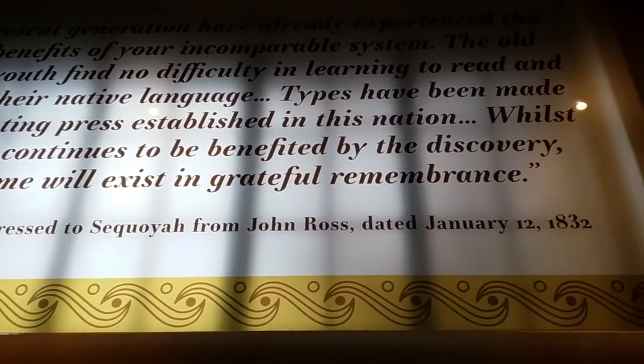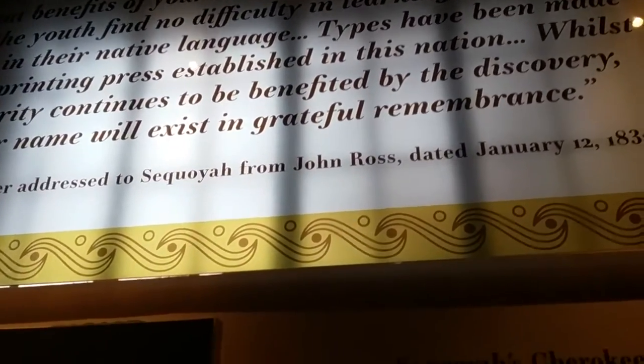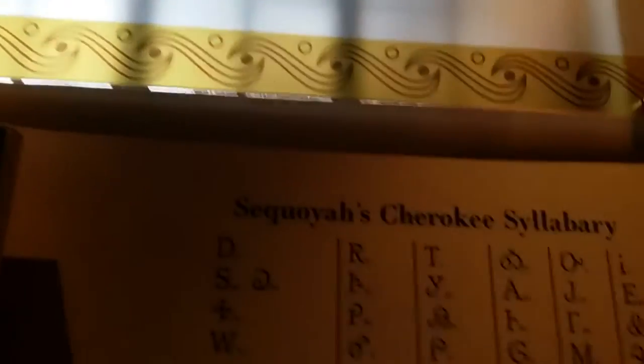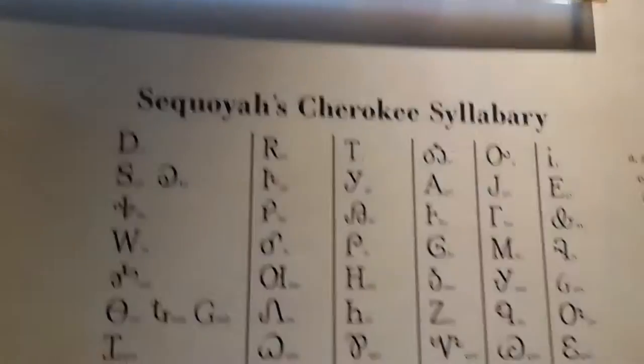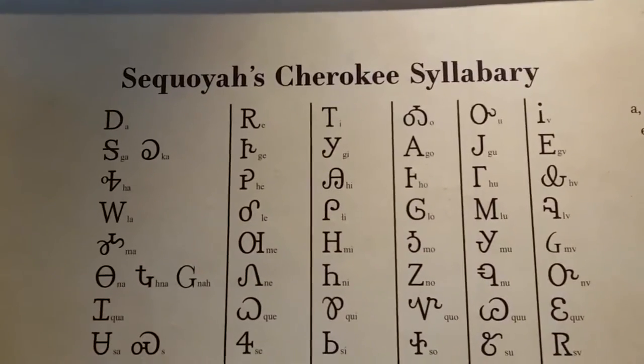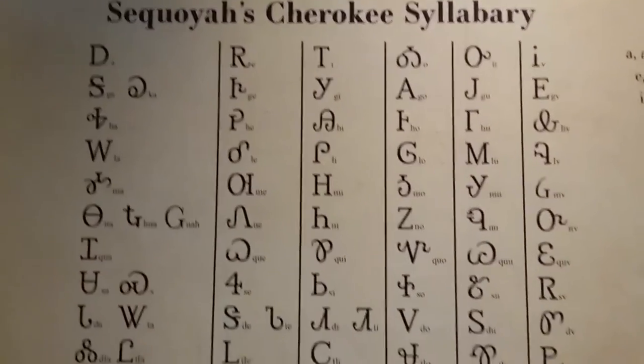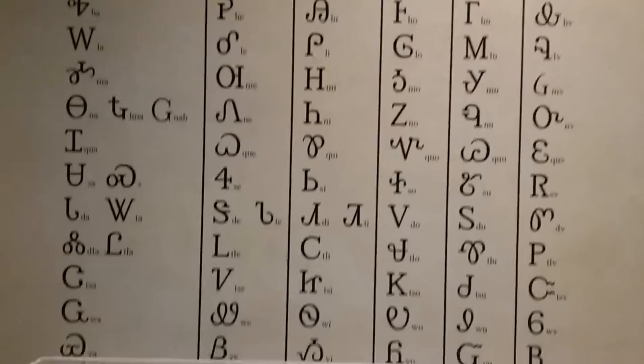And here's the typeset of the Sequoia Cherokee symbolery. Look at that — that's pretty amazing.